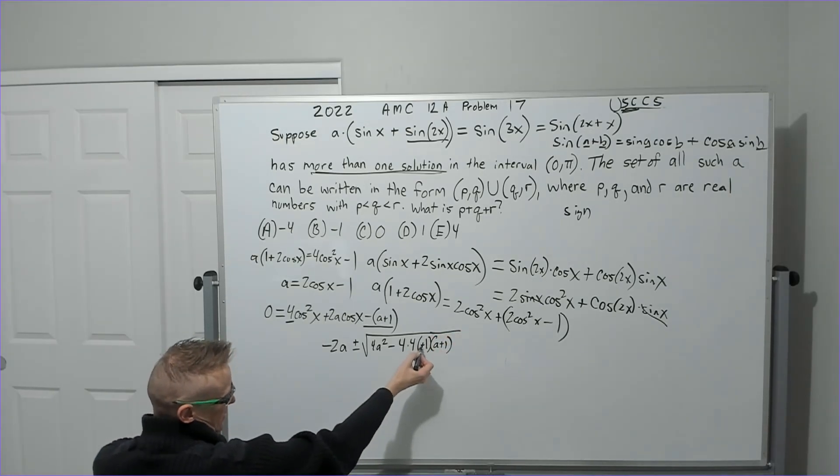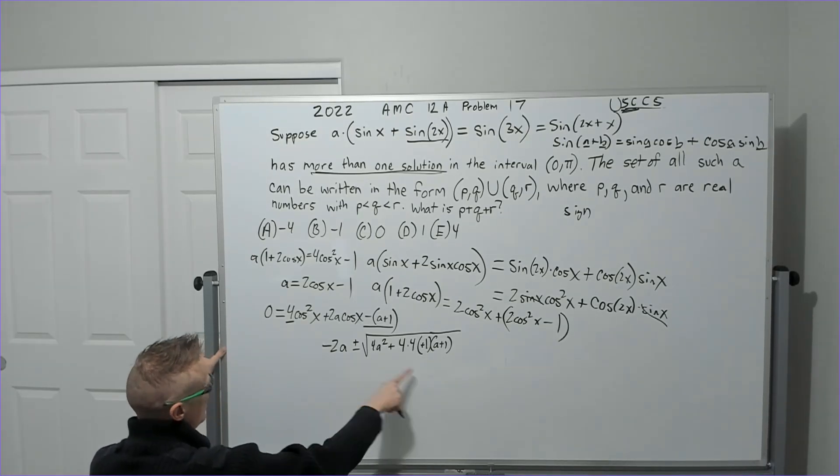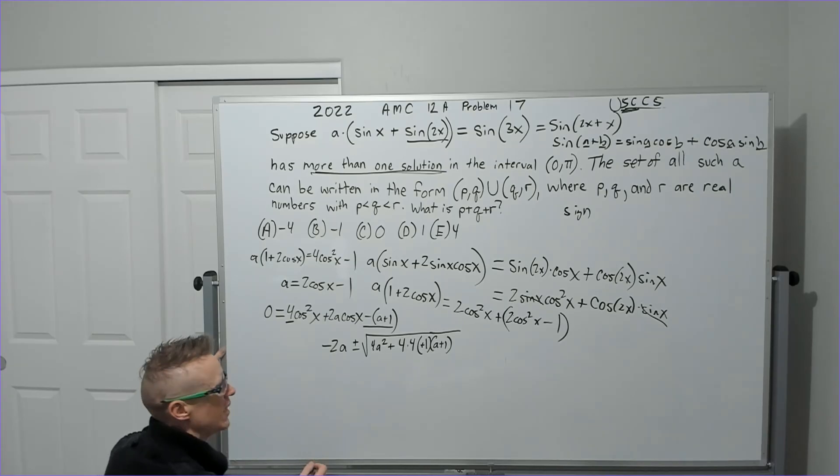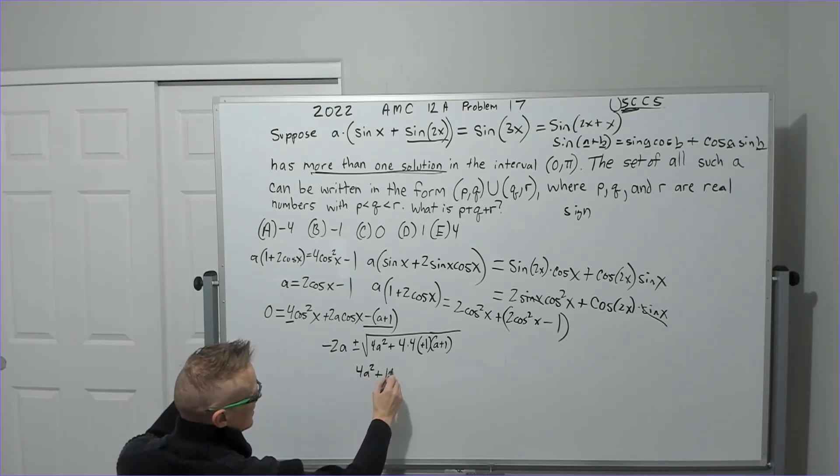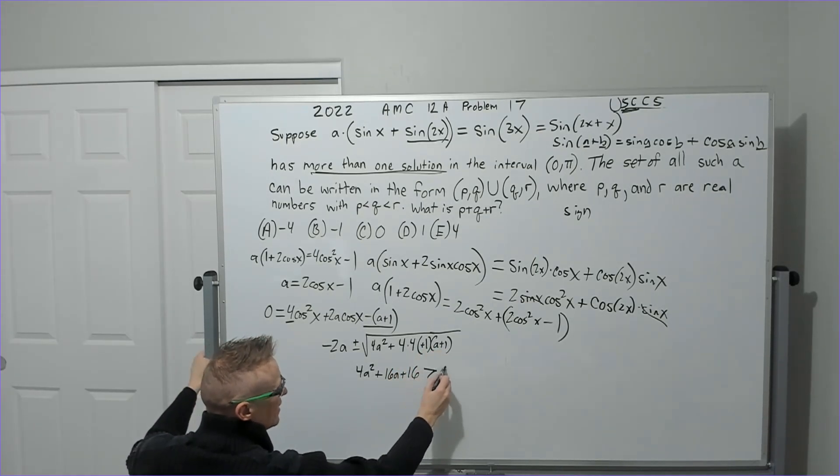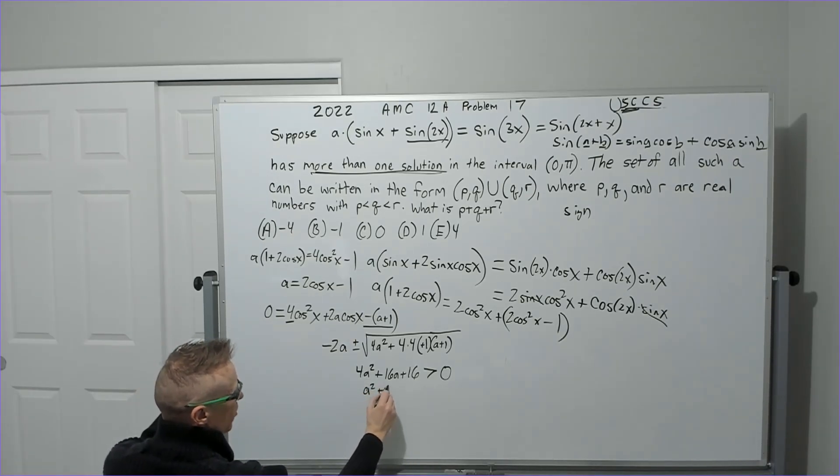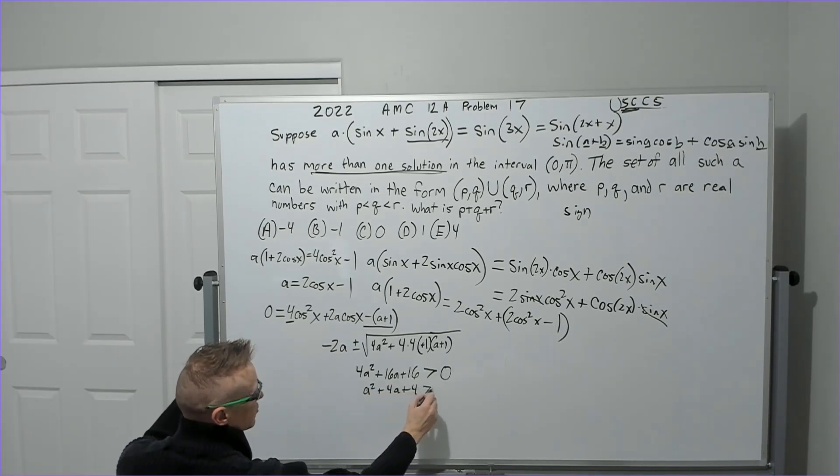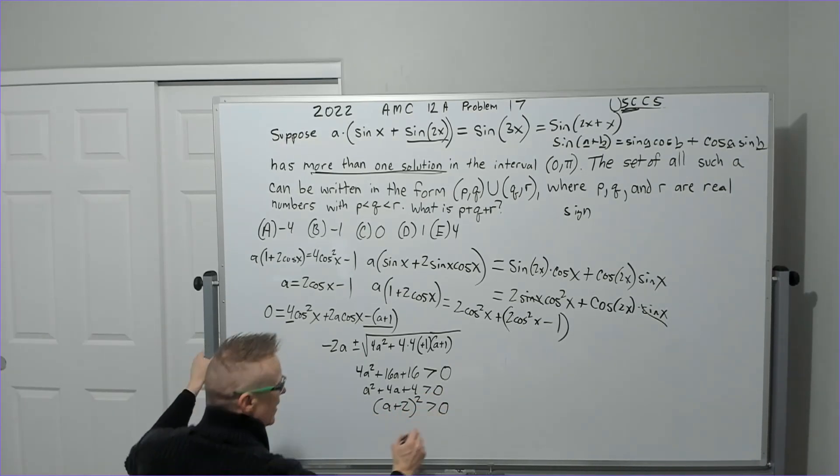Now the first thing is this negative and that negative cancel. I really only care about the discriminant. Yeah, there's a denominator of 8. It's not going to play a role. And so what we're going to do next is write this as 4a squared plus 16a plus 16. 16 times a plus 1. We need that to be greater than 0. I'll divide by 4: a squared plus 4a plus 4 greater than 0. That factors a plus 2 squared greater than 0.